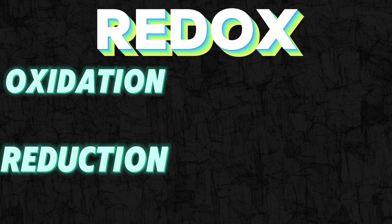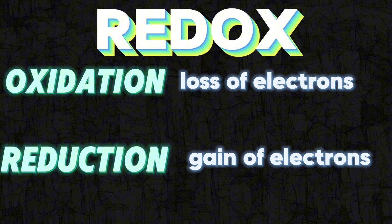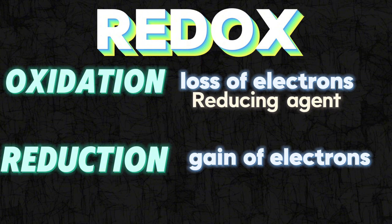Welcome. Today we will deal with redox reactions. The word redox means oxidation and reduction. Oxidation means loss of electrons, and reduction means gain of electrons. The atom which is losing electrons is called the reducing agent, and the atom which is gaining electrons is called the oxidizing agent.